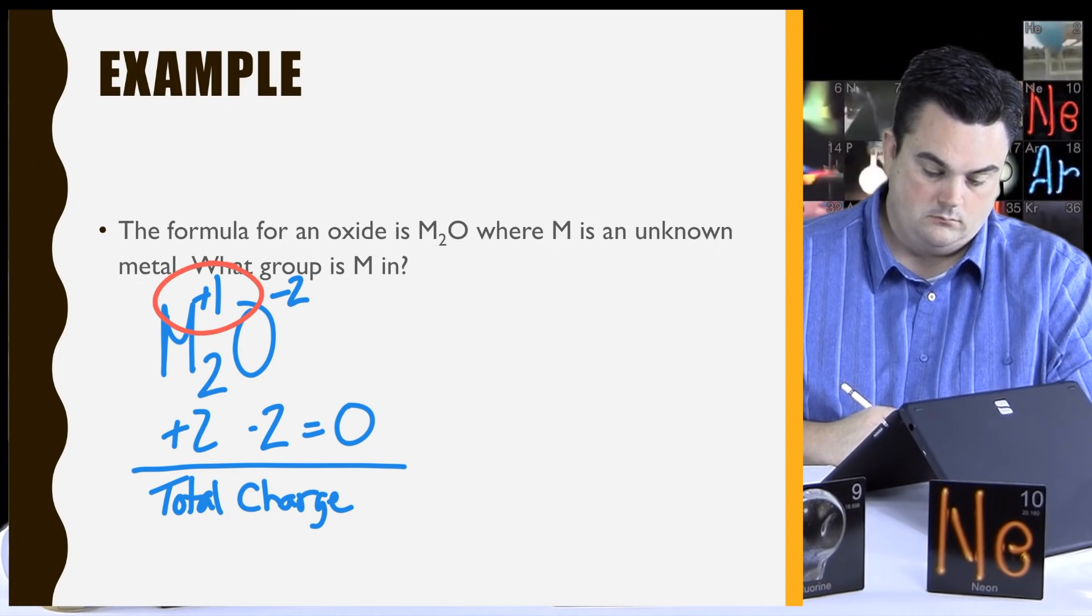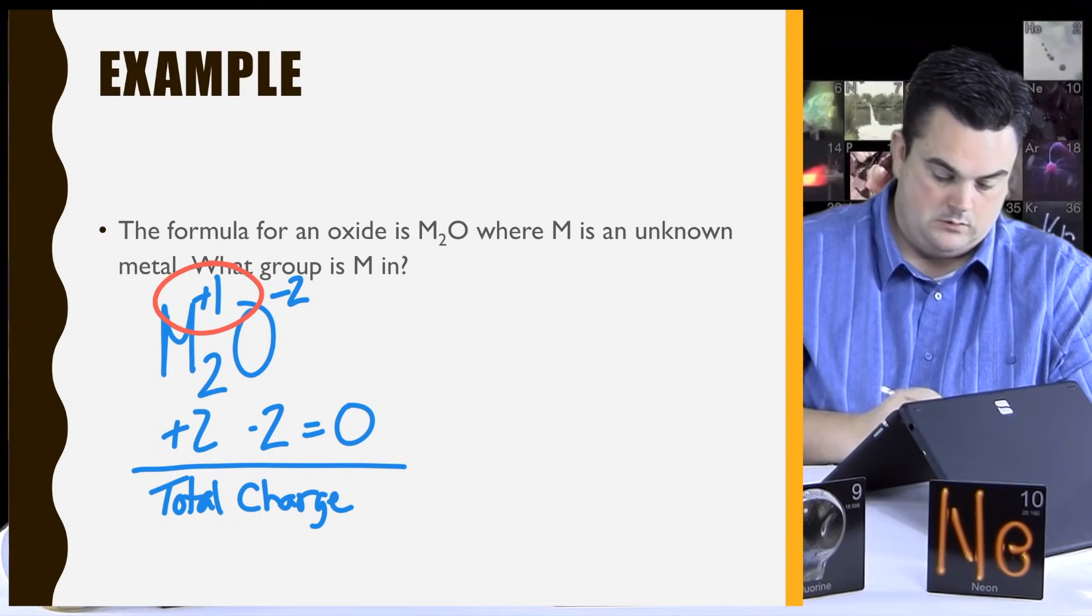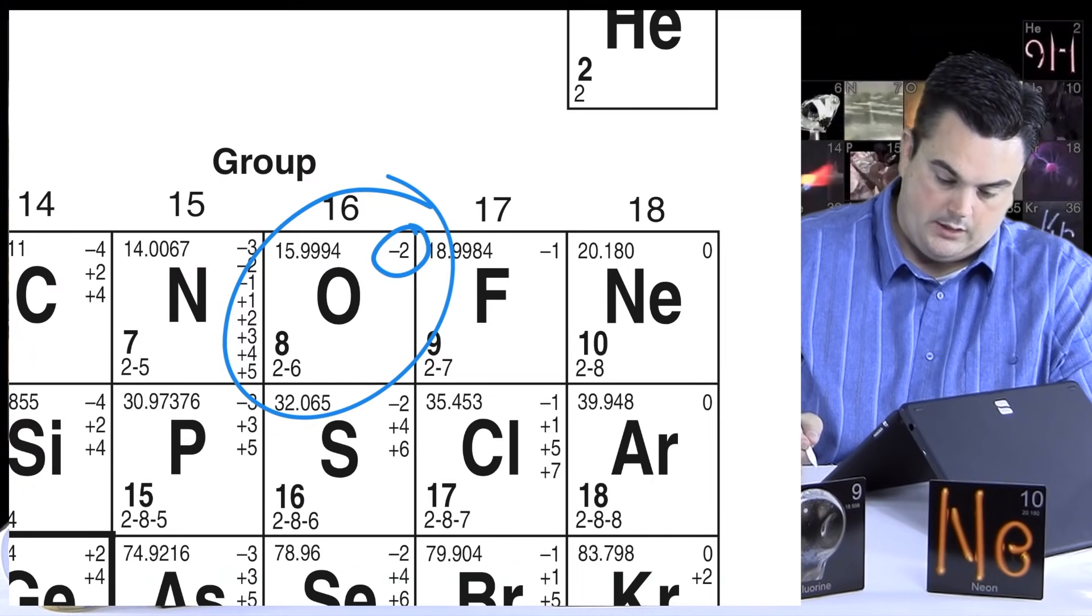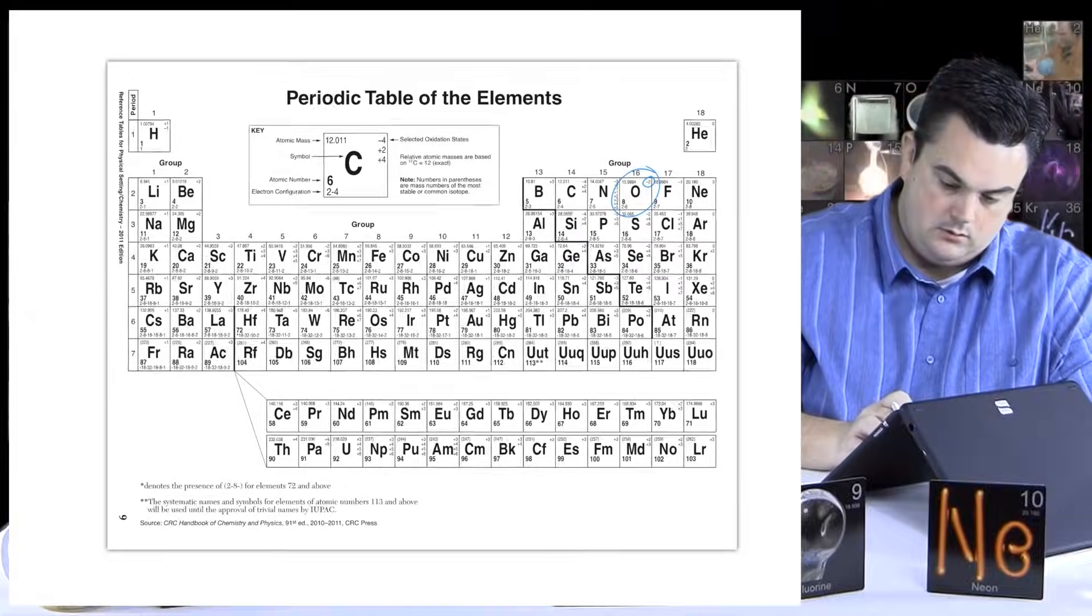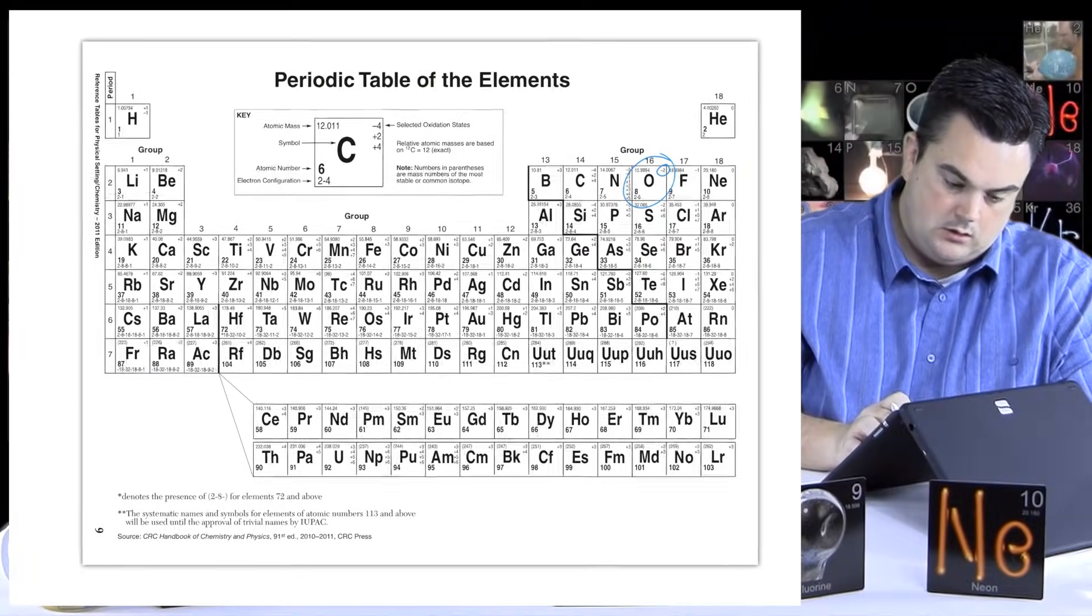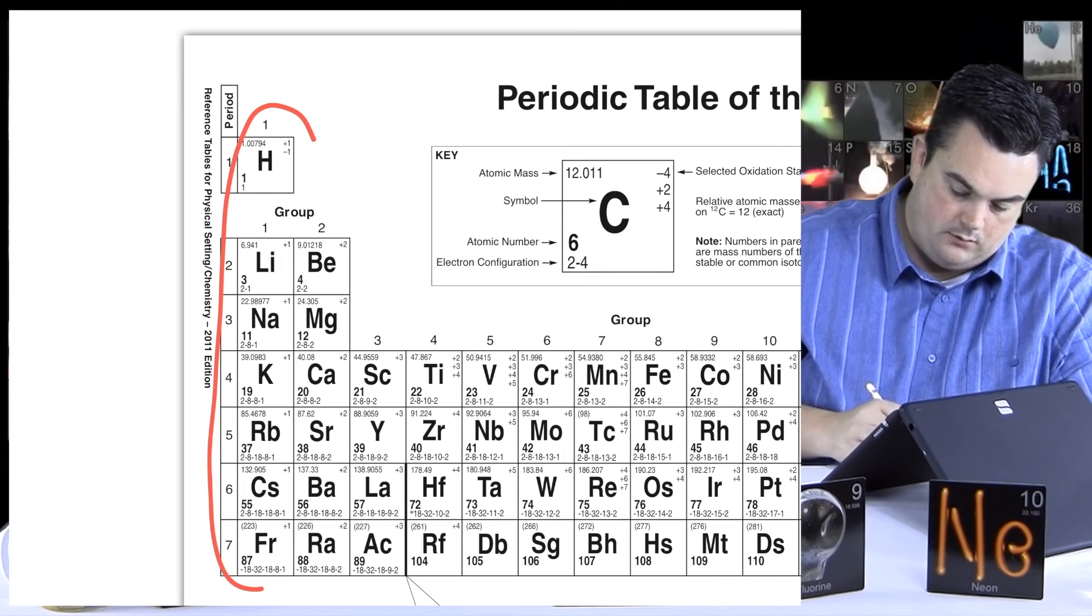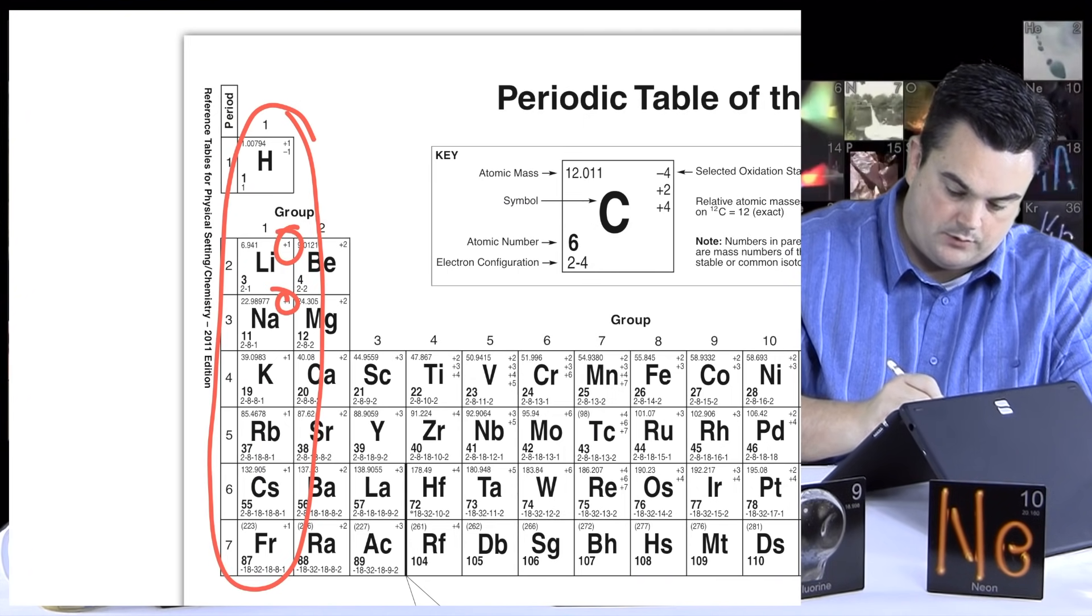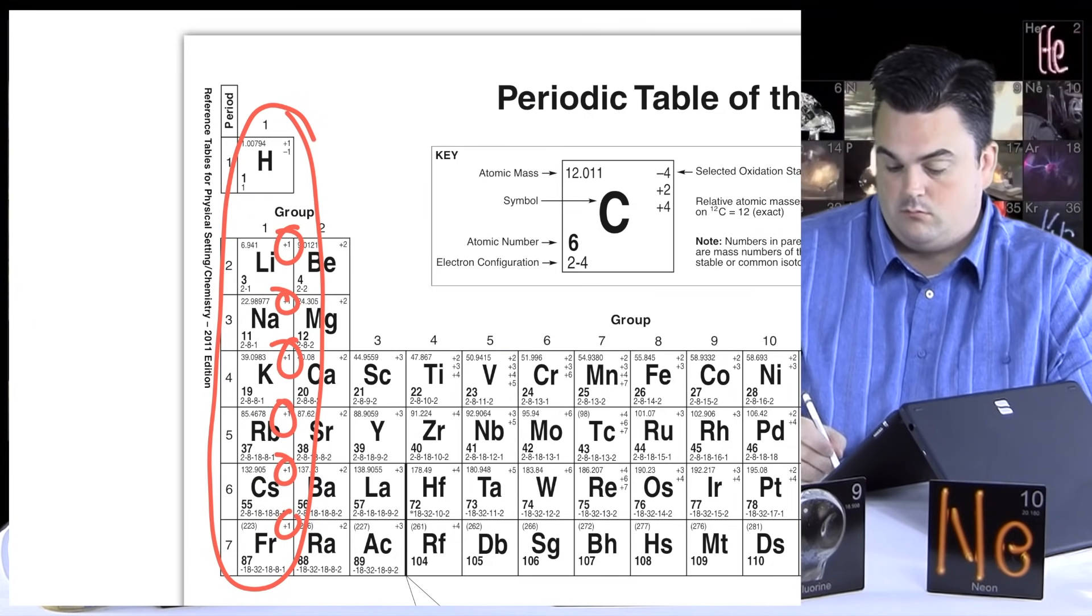All right. So that actually means that the oxidation state of M isn't plus 2, but instead it is plus 1. Now if you remember, our final goal here was to determine what group metal M is in. So using that plus 1 charge, let's go back to our periodic table. Okay. Let me zoom back out here. All right. So what group always has a plus 1 charge for its oxidation number? Ah, I see. If you take a look at group 1 here, every single one has got a plus 1 charge. So M must be in group 1. Very good.